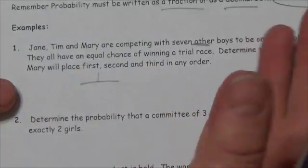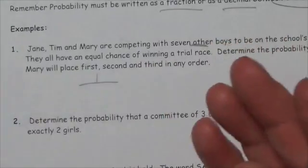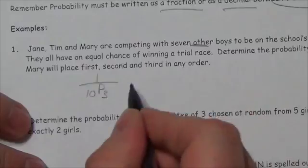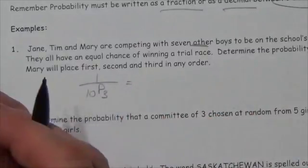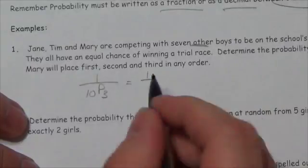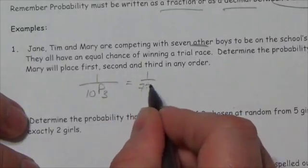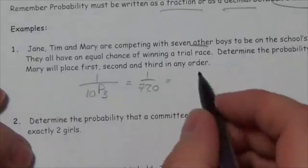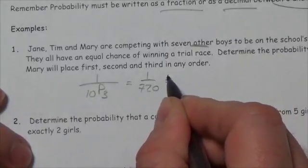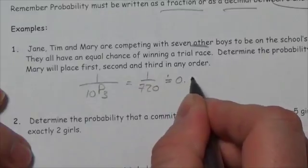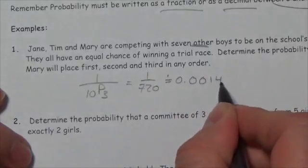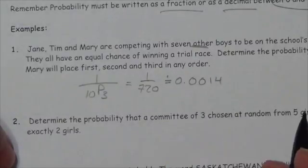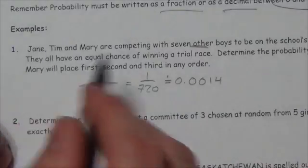And it should be pretty clear that order is important here. So this is definitely a permutation. So that means there are 10P3 different ways that that race could finish in total. Now, go to the calculator, and you'll see that 10P3 is going to be 720. And so now, if we wanted to figure out what that was in a decimal form here, this is going to be approximately 0.0014 is my probability. Now, I'll convert that to a percent, and you've still only got 0.14% that those three would finish in that order.